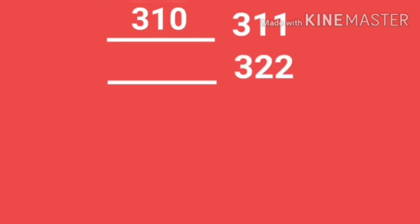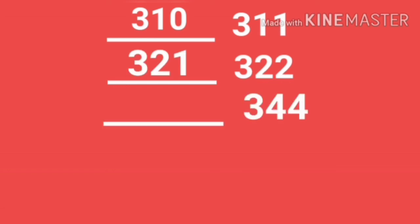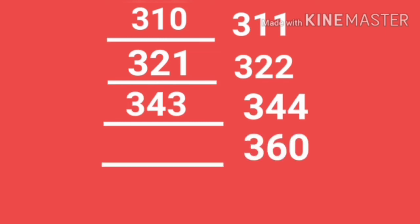The before number for 311 is 310. The before number for 322 is 321. The before number for 344 is 343.